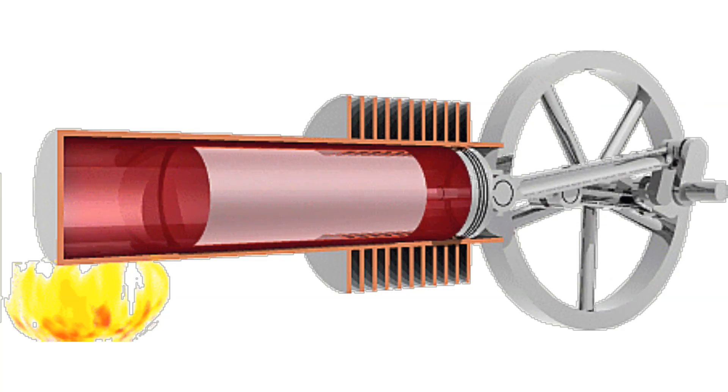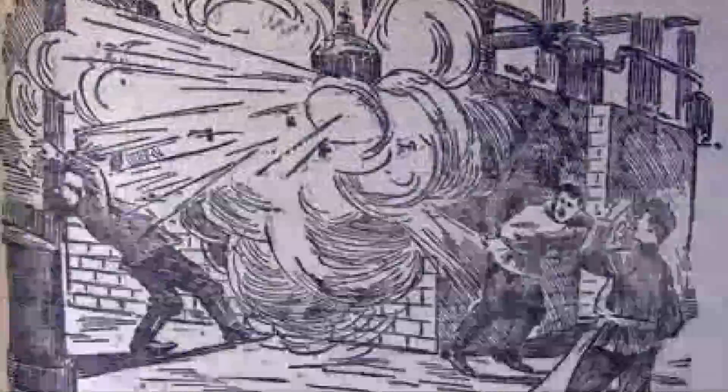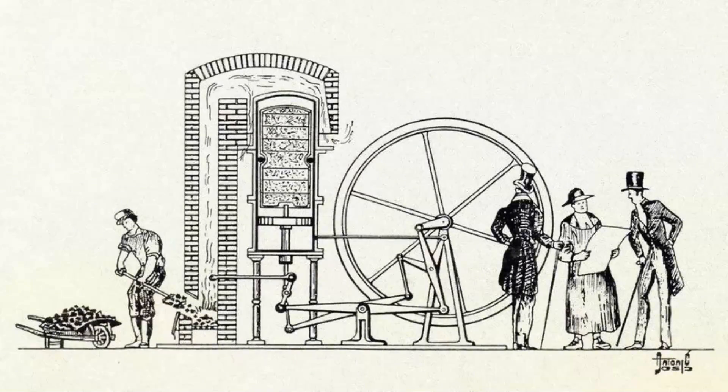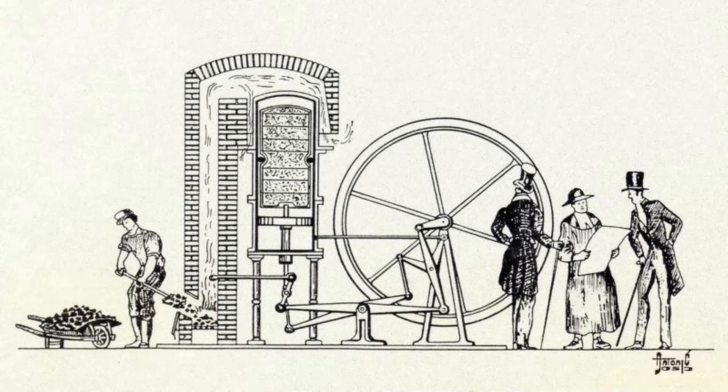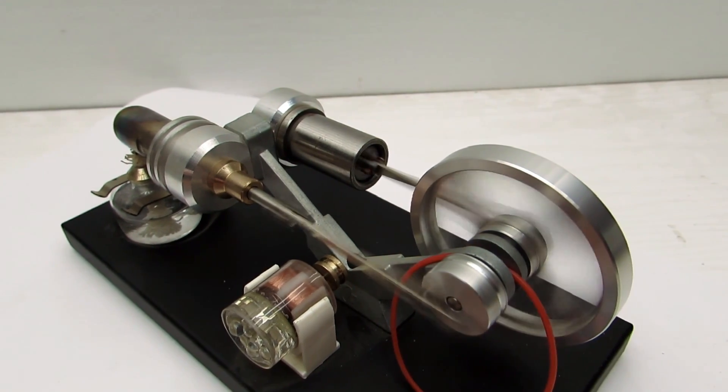This was exactly Stirling's goal, as the first steam engines were not reliable. At that time, explosion of steam engine boilers killed many humans. The new engine was more economical, safe, and was able to run on any fuel. The efficiency of Stirling engine was higher than steam engines.